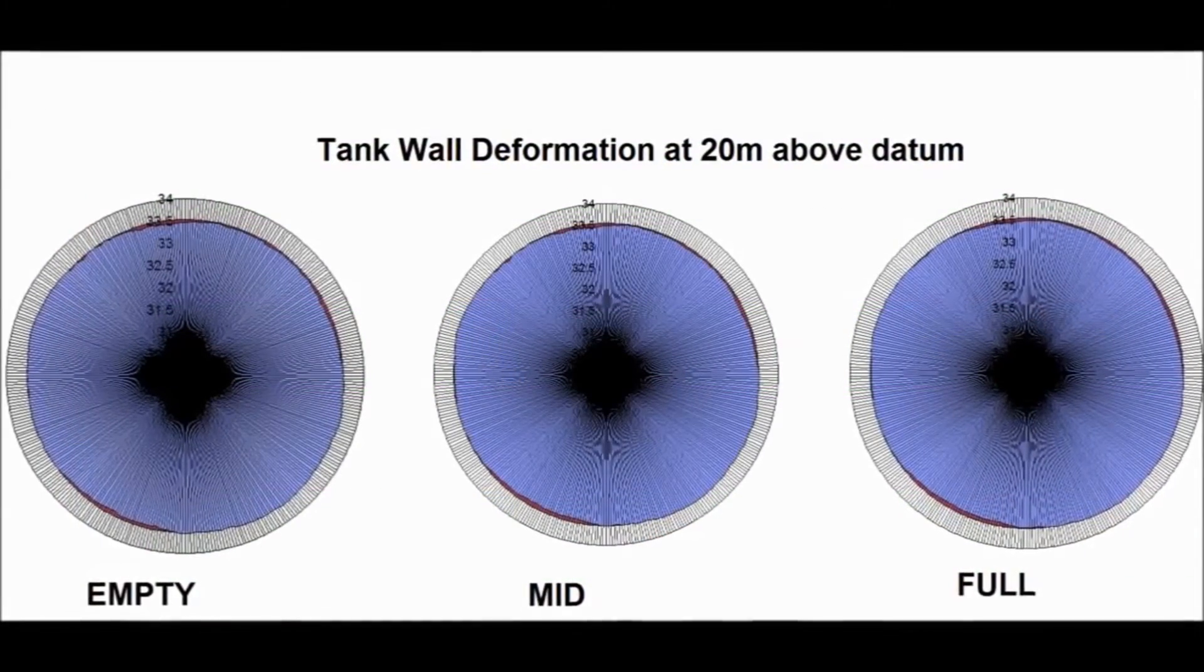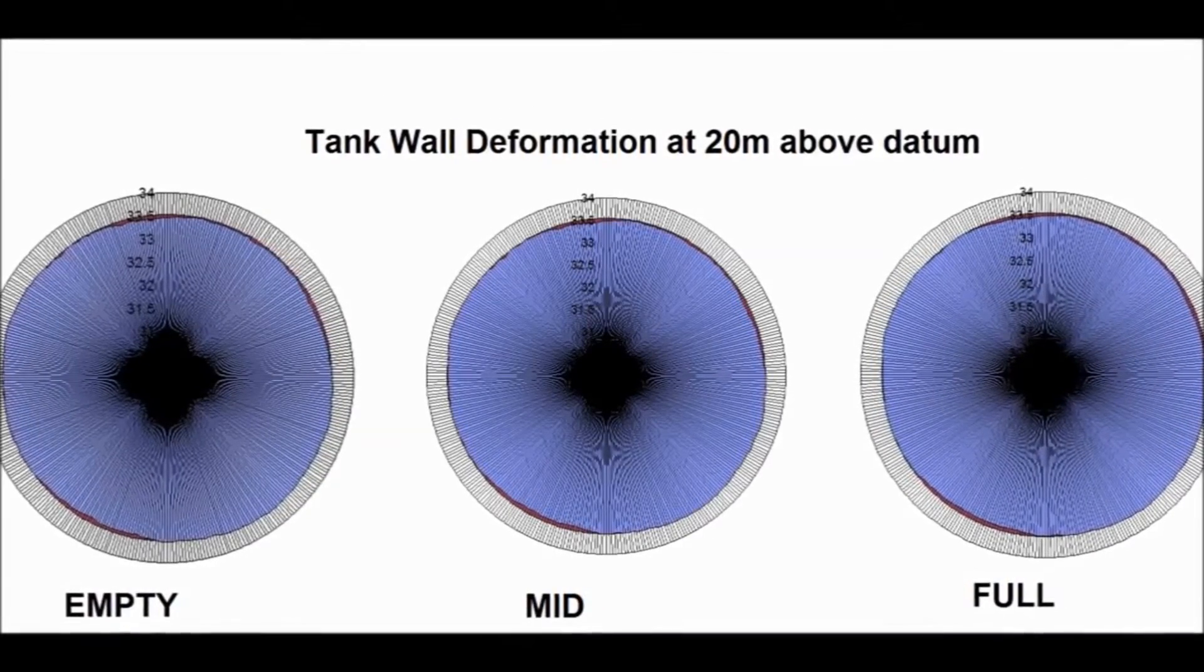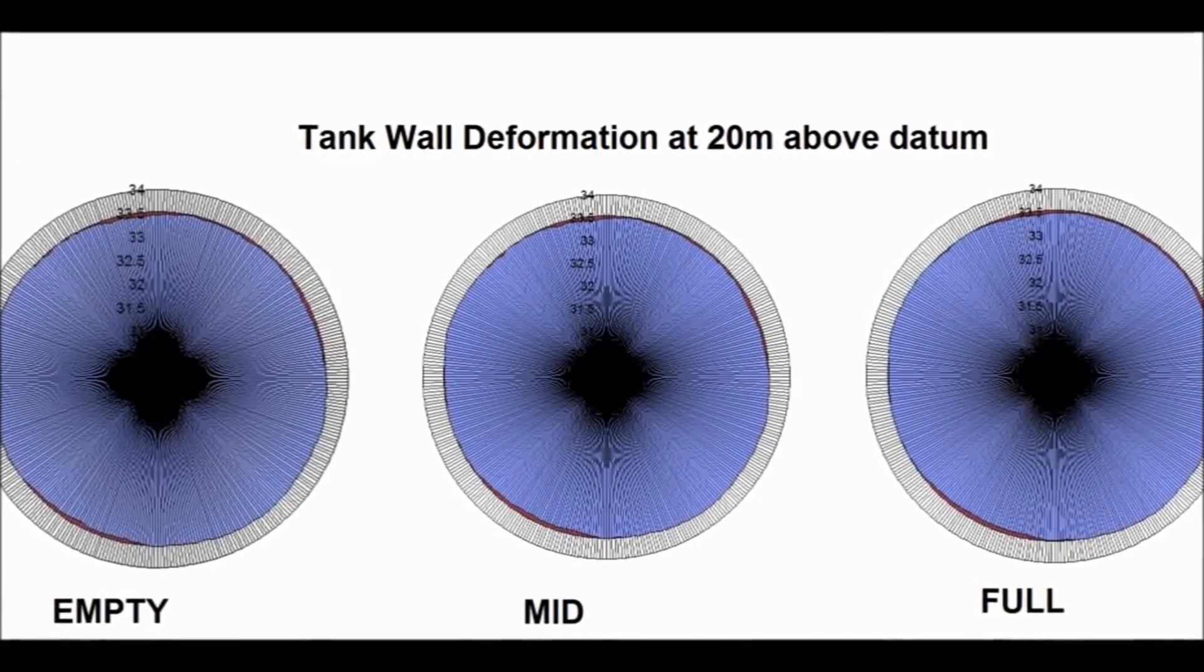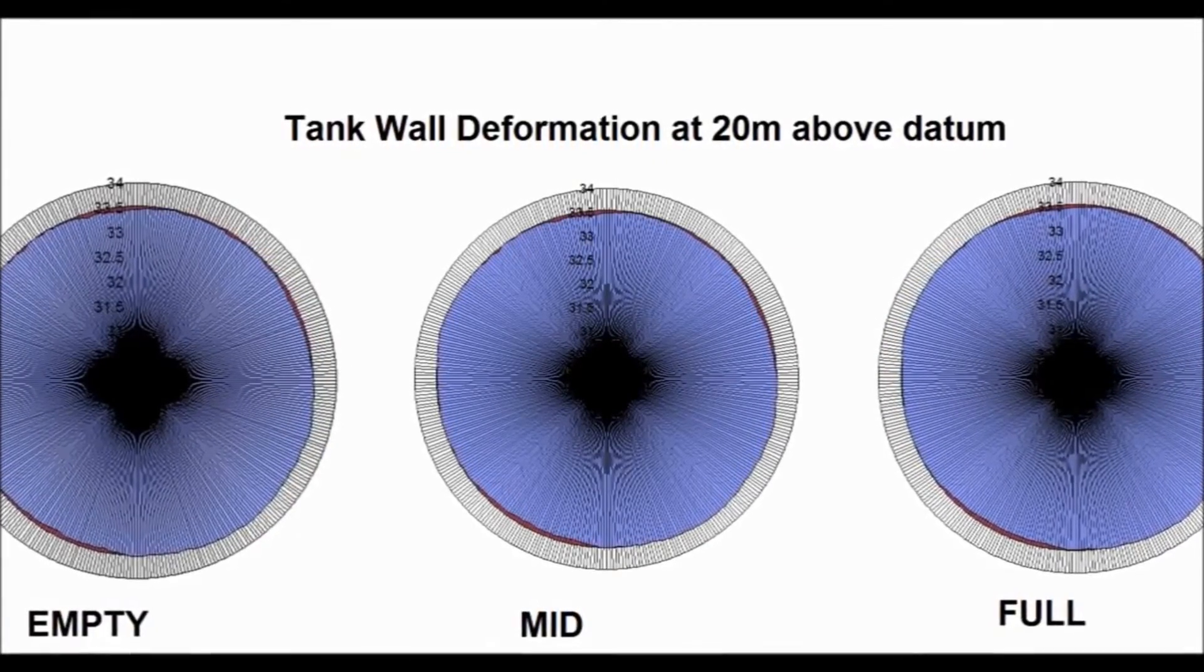Radial displacement plots, slices through the storage tank, can be created at any location. The plots here show a measurement for every degree around the tank wall, at the three different states of fill.